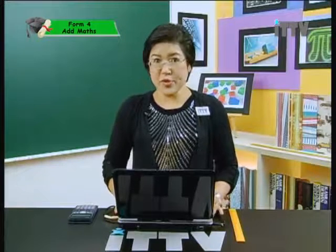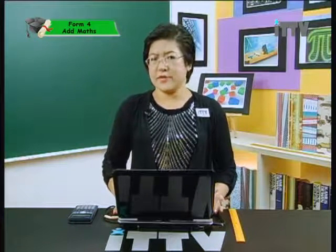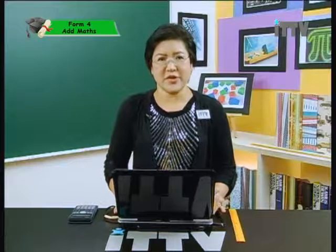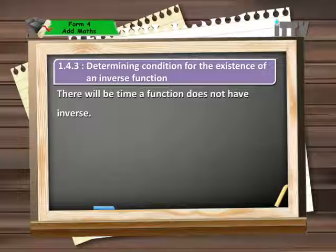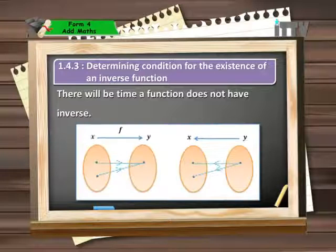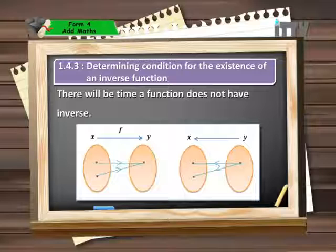That was the algebraic way to find the expression for the inverse function. But does an inverse function always exist? Let's read on. Determining conditions for the existence of an inverse function. There will be times when a function does not have an inverse. In the diagram given, we have an illustration of when a function does not have an inverse. The left-hand side contains two object values sharing the same image, and this is classified as a many-to-one relation.